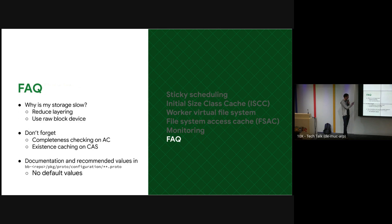Don't forget completeness checking on the action cache, and existence caching on the content-addressable storage. For documentation, as I said in the beginning, look in the proto files — there are default values and they are really good.